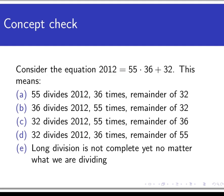Consider the equation 2012 equals 55 times 36 plus 32. And that is a true equation. You can check that. But what does it mean? Here are four statements about what divides what how many times with a remainder. And I want you to select all that apply. And don't cheat by actually using long division. Just see if you can tell merely by looking at the equation.